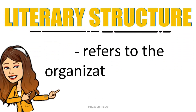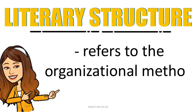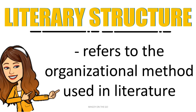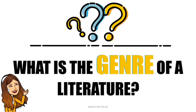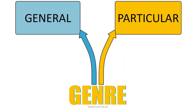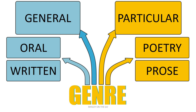Literary structure refers to the organizational method used in literature. There are two categories for the genre of literature: the general and the particular. For the general, we have oral and written. For the particular, we have poetry and prose.